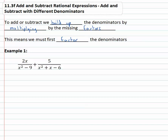So when we see 2x over x² minus 9 plus 5 over x² plus x minus 6, we need to first find a common denominator by factoring the denominators. x² minus 9 you should recognize as one of our shortcuts — it's a difference of squares. The square root of x² is x, and the square root of 9 is 3.